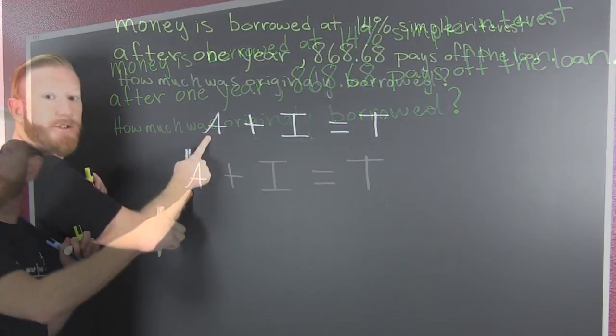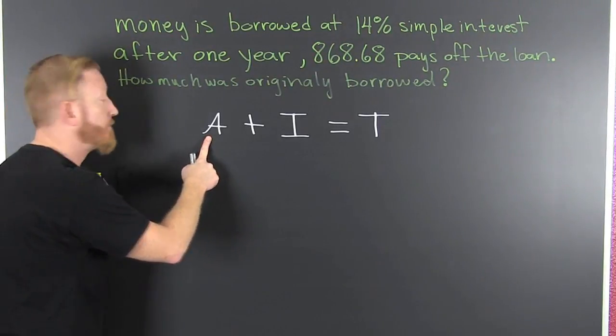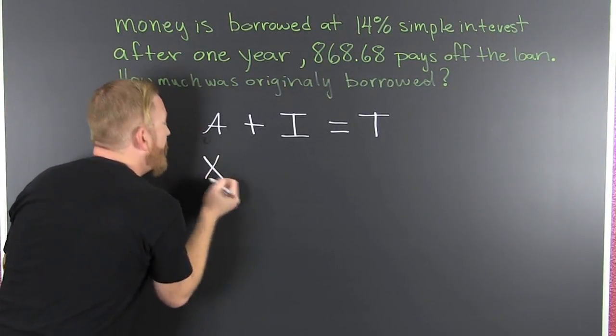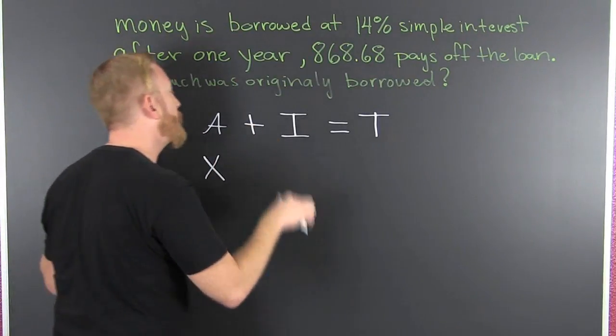And how much was originally borrowed? Do you know? You don't know. That's what we want to know. So we go and we call it X. That's our variable. We could use anything. We could have even stayed with A.